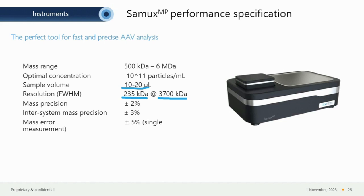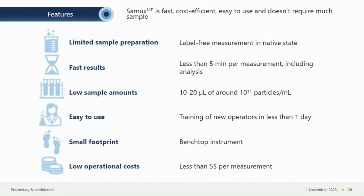To summarize: the SAMUX MP is a fast, cost-efficient, and easy-to-use system requiring little sample volume and sample preparation. It works at single molecule resolution with label-free measurement in the native state. Measurements including analysis take less than five minutes. Only 10 to 20 microliters and 10¹¹ particles per milliliter are required. It fits on a lab bench, and each measurement costs less than five US dollars. Less than one day of training is needed for new users to feel confident.